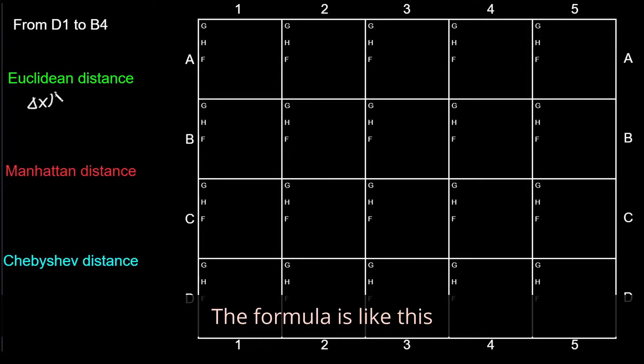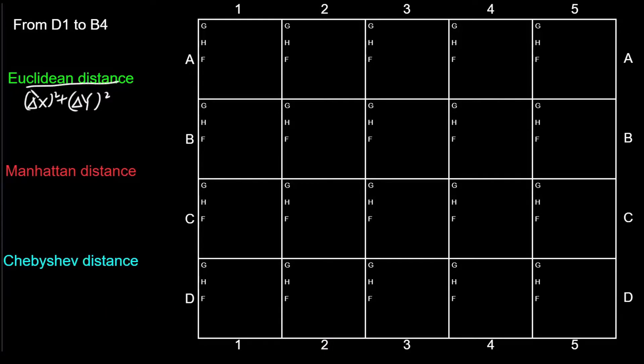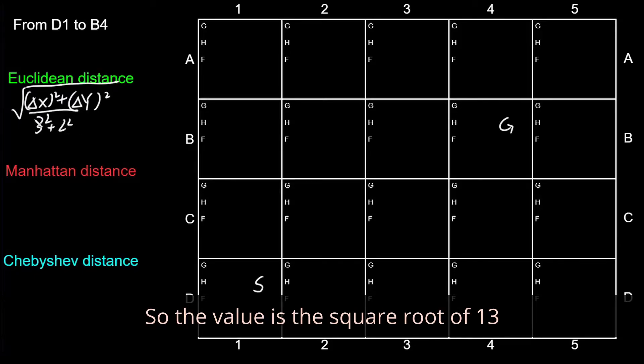The formula is like this, so it is simply the direct length between these two nodes. And in our case, the dx is 3 and dy is 2, so the value is the square root of 13, which is around 3.6.